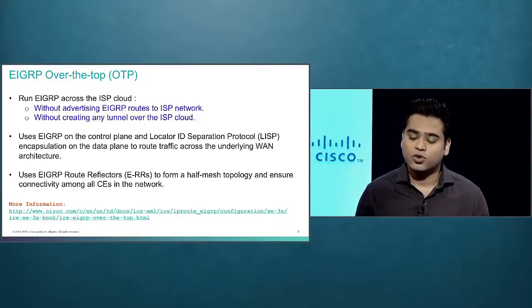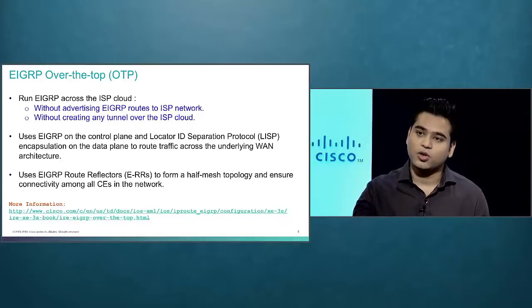With EIGRP over the top, you don't have to depend on the provider, because you can use EIGRP between your remote sites without any redistribution into the provider network, and it's easy to configure without any specific additional protocol. From an architecture point of view, at the control plane, OTP uses EIGRP for route exchange. At the data plane, it uses LISP — Locator ID Separation Protocol — encapsulation. It also uses a concept similar to BGP route reflectors to avoid a full mesh of EIGRP neighbors.